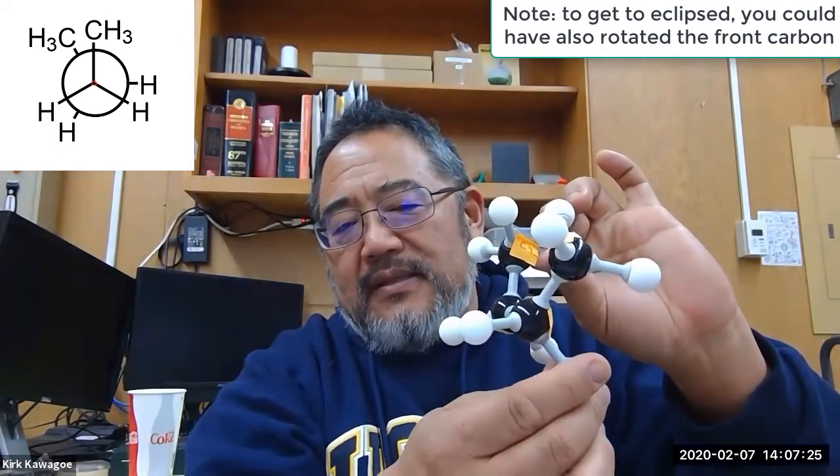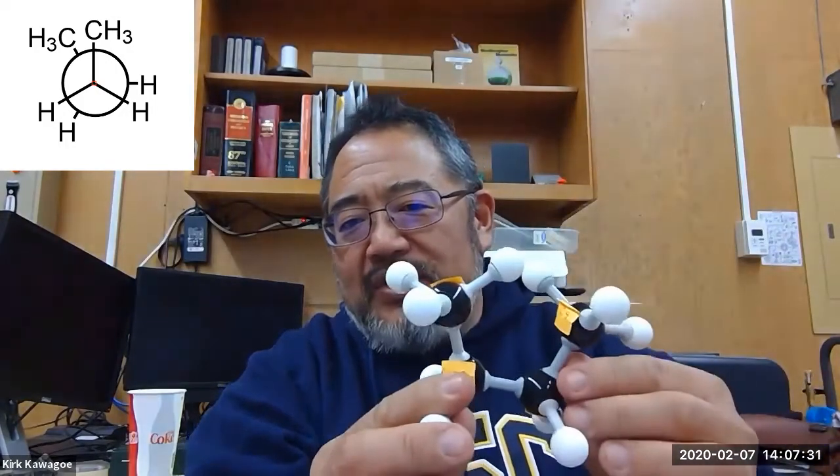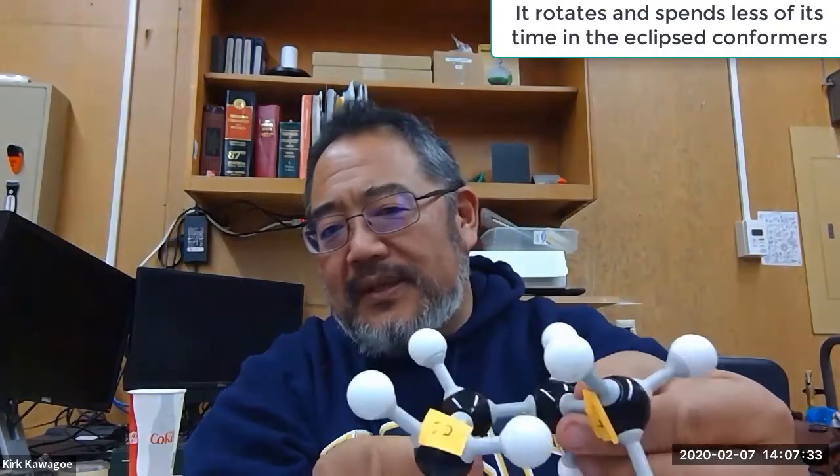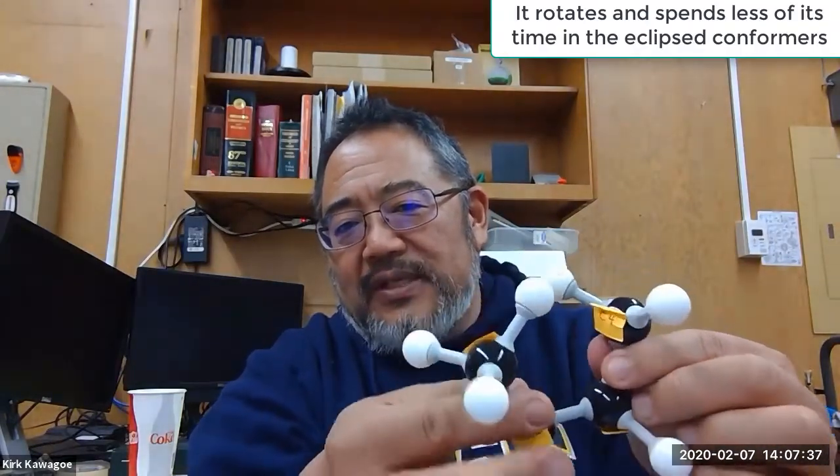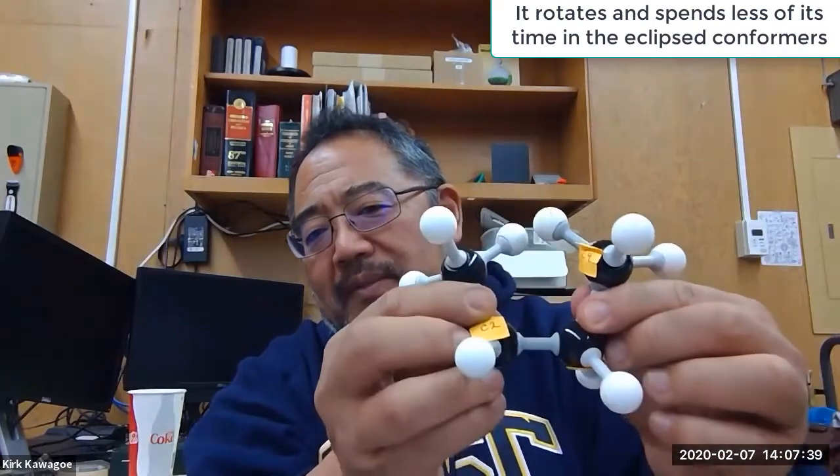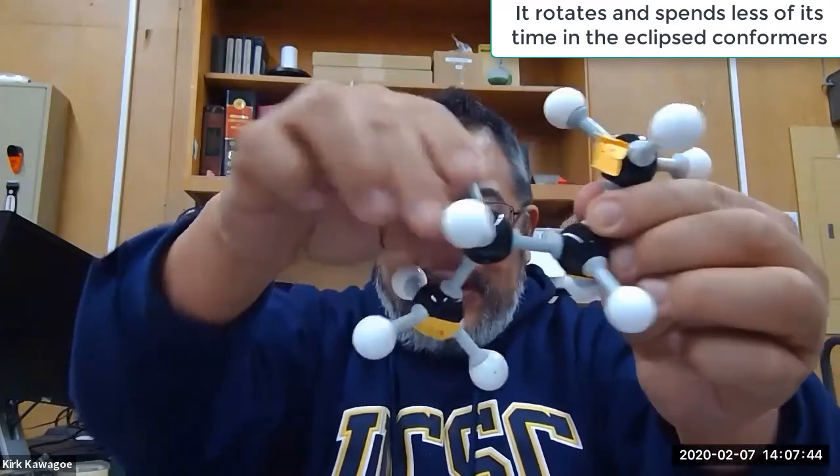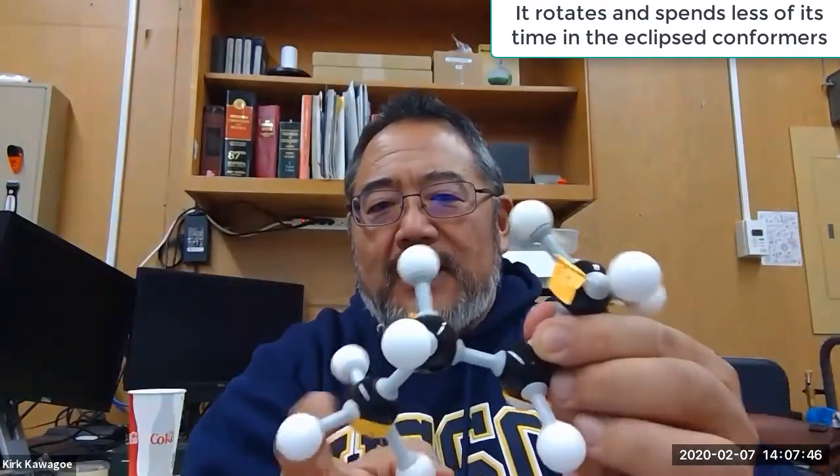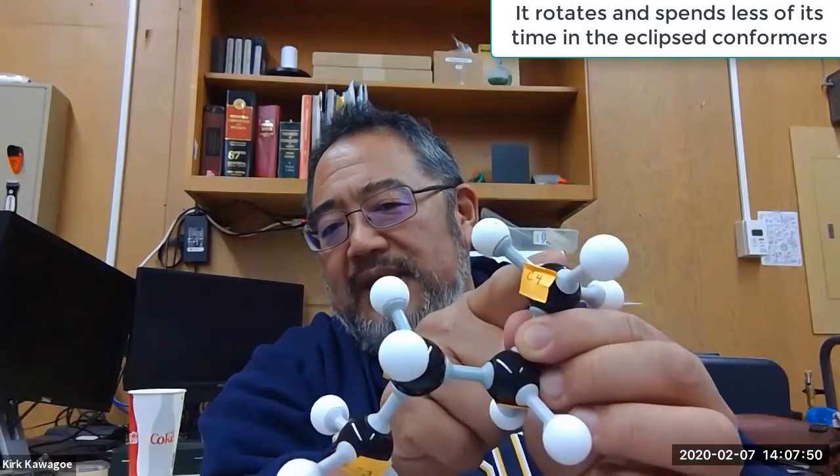This is the highest steric interaction conformer for butane because if you turn this sideways you can see they're like overlapping on each other. They actually touch. So this is very high energy and this molecule is free to rotate. Remember single bonds are free to rotate. So the natural inclination is for that large group that's on C1 to move far away from the large group that's C4.